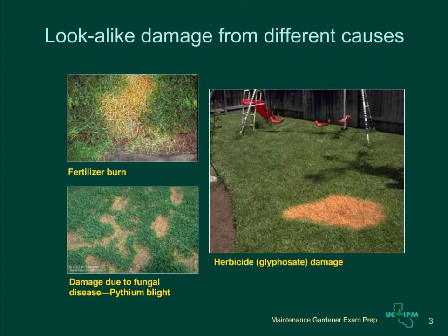In order to properly manage problems in landscapes, you must be able to identify the cause. Here are three examples of damaged lawns. Brown, yellow, or dead spots in lawns may have many causes. Don't assume they're caused by insects or disease. Three causes are shown here: fertilizer burn at top, herbicide burn under the playset, and damage due to fungal disease at the bottom. Poor water management can cause dead spots in lawns as well. If you apply pesticides when the cause of damage is a leaky sprinkler head or fertilizer burn, you will not fix the problem, and you will have wasted time and money.